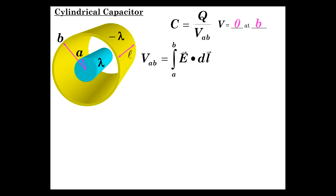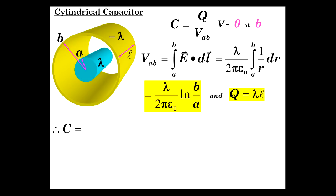Now, the E field is lambda over 2 pi epsilon zero R. So, lambda over 2 pi epsilon zero is constant that comes out. Integral of 1 over R is natural log. So, we have that. And, we have that the charge of this particular segment here is, the charge is the charge per length times length. So, charge is lambda times L.